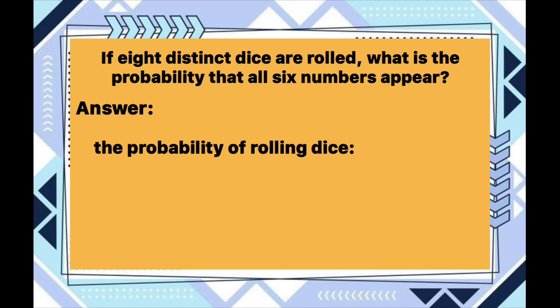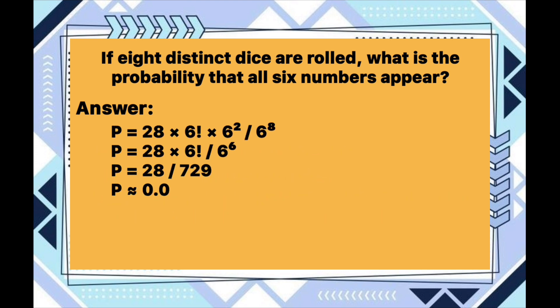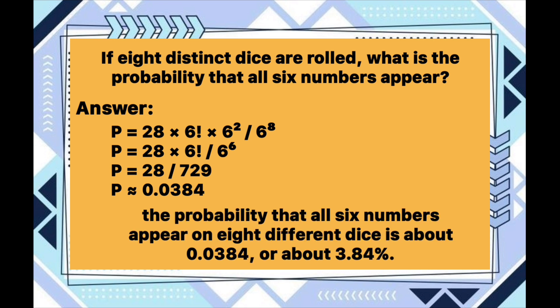So the probability of rolling all six numbers on eight distinct dice is: P(all six numbers appear) = (28 times 6! times 6²) / 6⁸, which simplifies to 28 times 6! over 6⁶, giving P = 28 / 729, or approximately 0.0384.